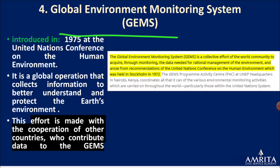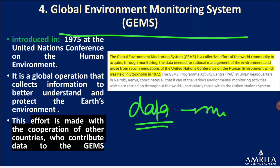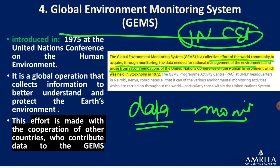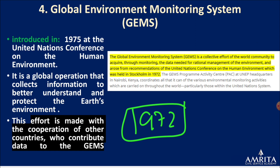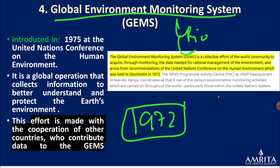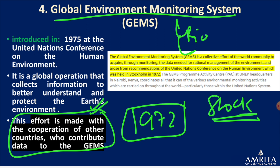Next is the Global Environment Monitoring System. This is a data-driven monitoring system — a collective effort of the world community to acquire data needed for rational management of the environment. It arose from the recommendations of the United Nations Conference on the Environment, held in Stockholm in 1972 — a very important conference, the first on the subject of environment protection. The system involves cooperation with other countries that contribute data.